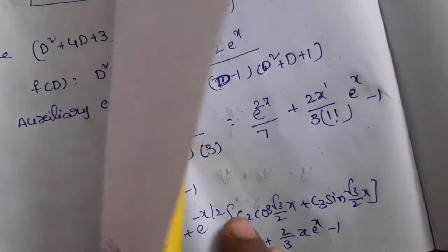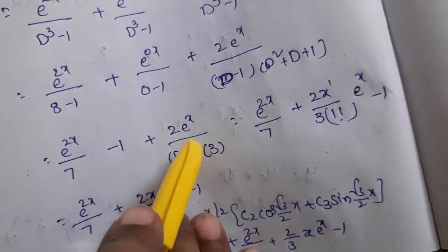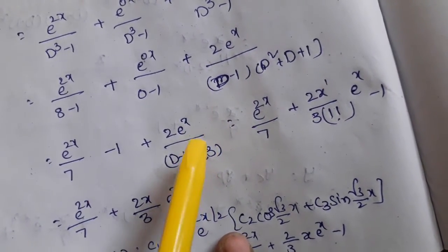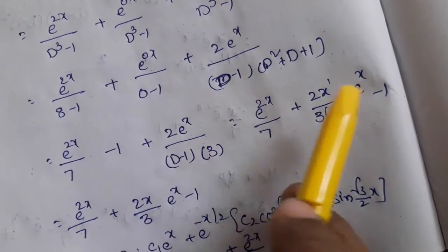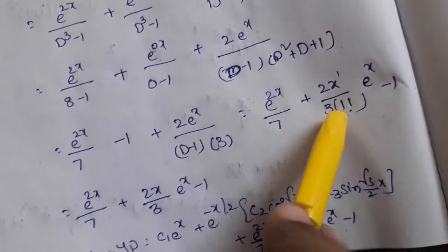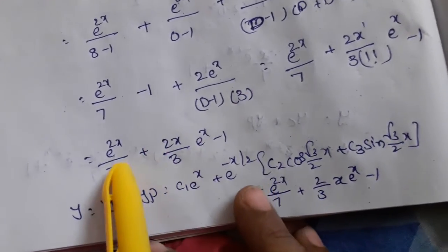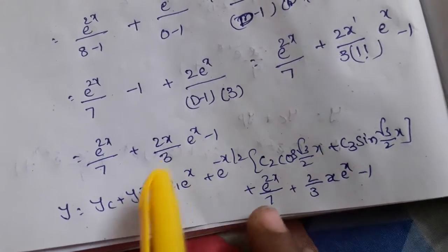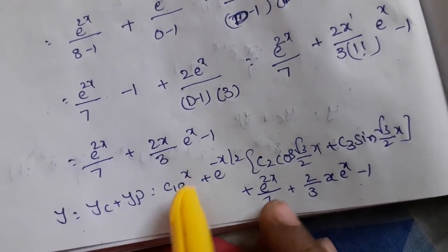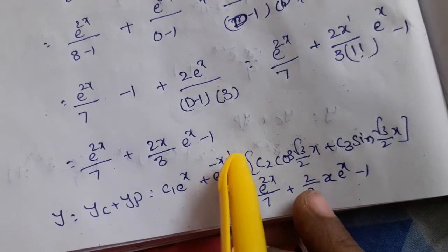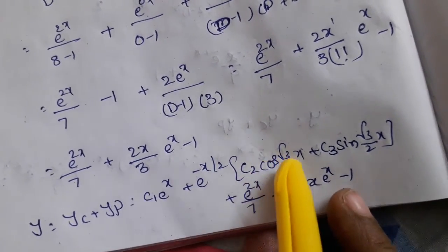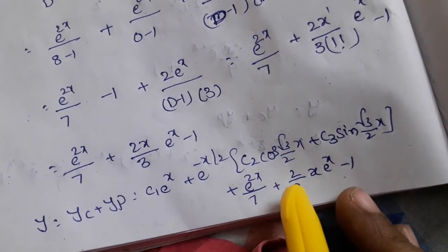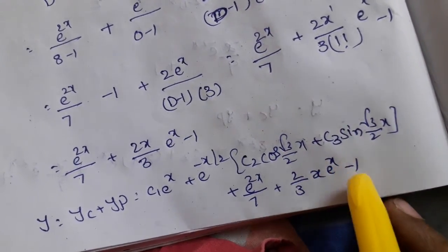Therefore yp = e^(2x)/7 + 2x·e^x/3 - 1. If the power of (D-1) were 3, we would write x³/3!; if it were 5, x⁵/5!, and so on. The general solution is y = yc + yp = c₁e^x + e^(-x/2)[c₂cos(√3x/2) + c₃sin(√3x/2)] + e^(2x)/7 + (2/3)x·e^x - 1.